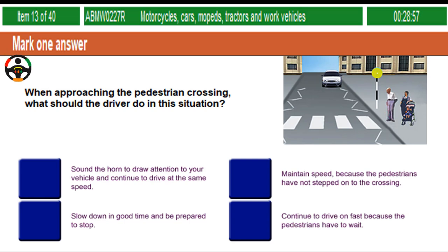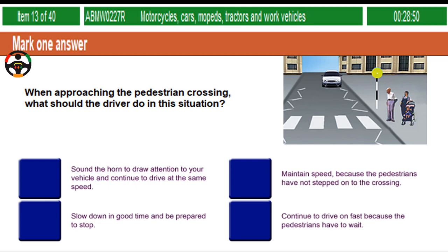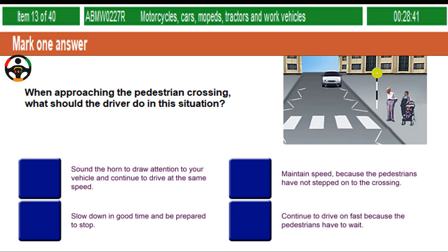When approaching the pedestrian crossing, what should the driver do in this situation? Sound the horn to draw attention to your vehicle and continue to drive at the same speed. Maintain speed because the pedestrians have not stepped onto the crossing. Slow down in good time and be prepared to stop. Continue to drive on fast because the pedestrians have to wait.